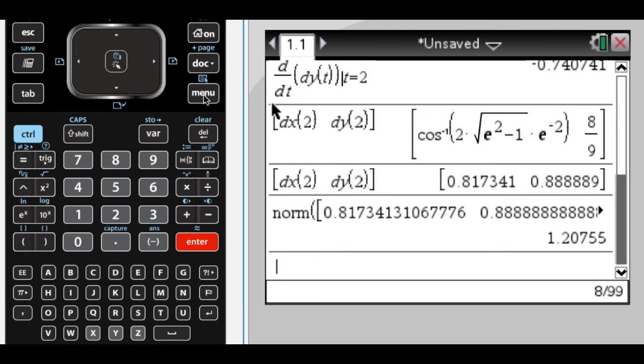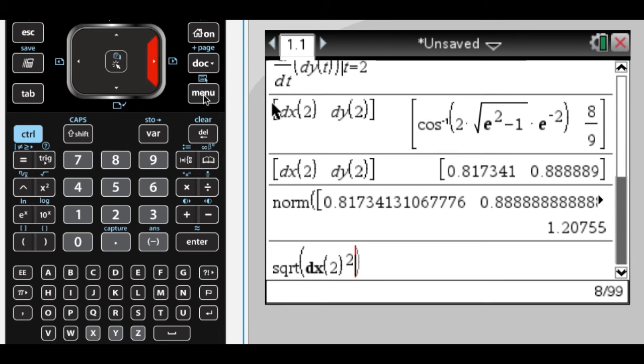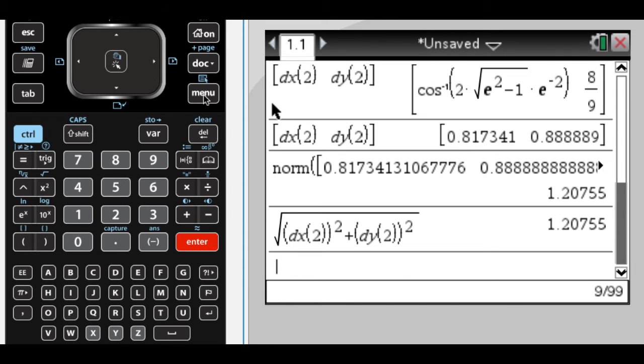The alternative is to do the square root of dx of 2 squared plus dy of 2 squared, and I'm guessing this is actually what most people do, and we get that. So that's what my work would look like, actually, square root of dx dt squared plus dy dt squared, such that t equals 2. Either way, that's our speed.